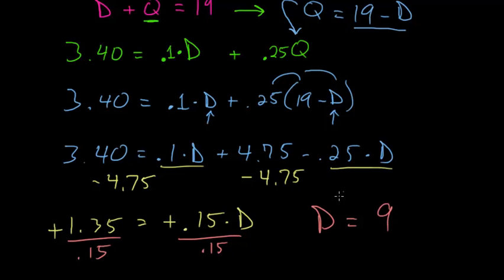If the number of dimes is 9, then the number of quarters is 10 since there are 19 total coins. This is our final answer.